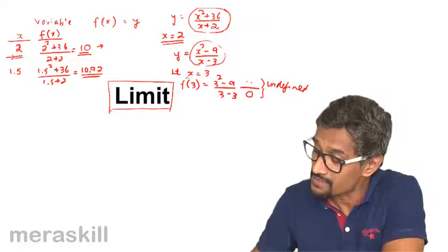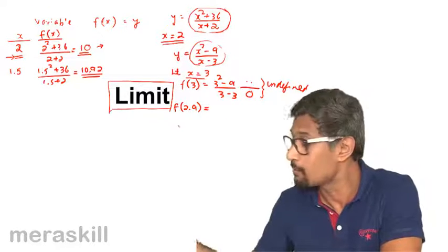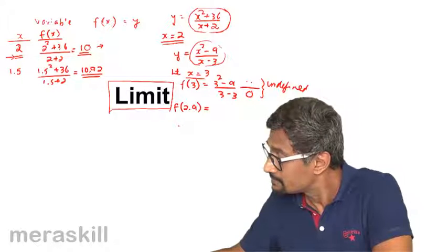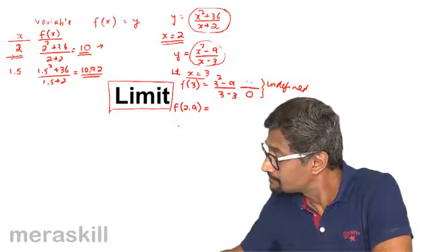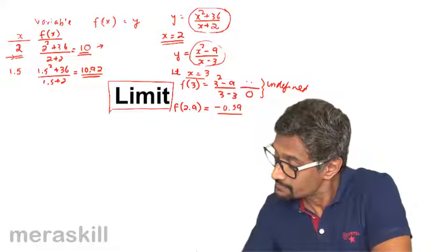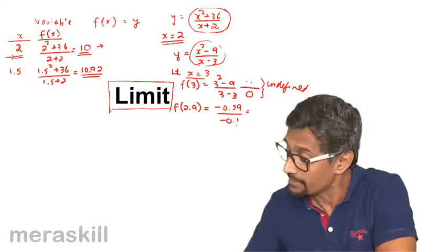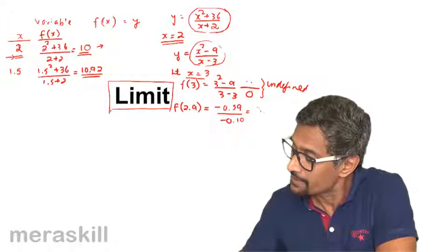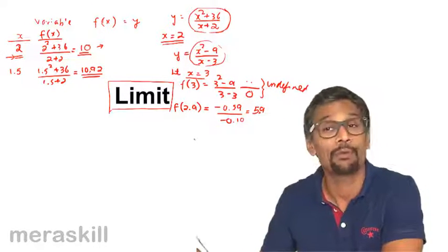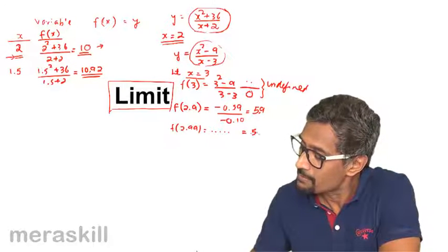When the value of x is 3, the function is indeterminate. But what will f of 2.9 be? It turns out to be minus 0.59 upon minus 0.1, which gives a value of 5.9. Similarly, f of 2.99 turns out to be a little more than 5.98.